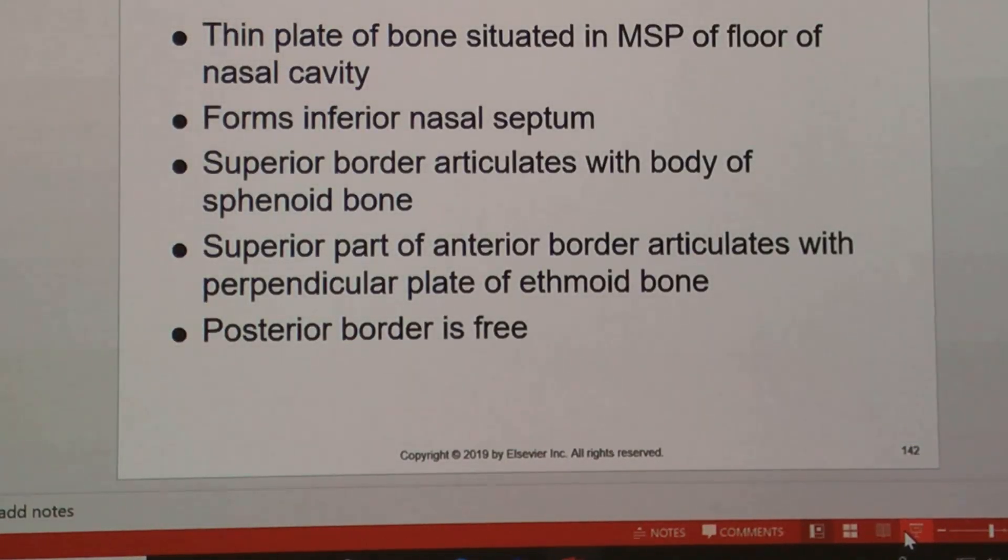The vomer is a thin-plated bone situated in the midsagittal plane in the floor of the nasal cavity, and it forms the most inferior portion of the nasal septum. It's continuous with the perpendicular plate and the crista galli all the way at the top of the ethmoid bone. So it's just a portion of the bony nasal septum.